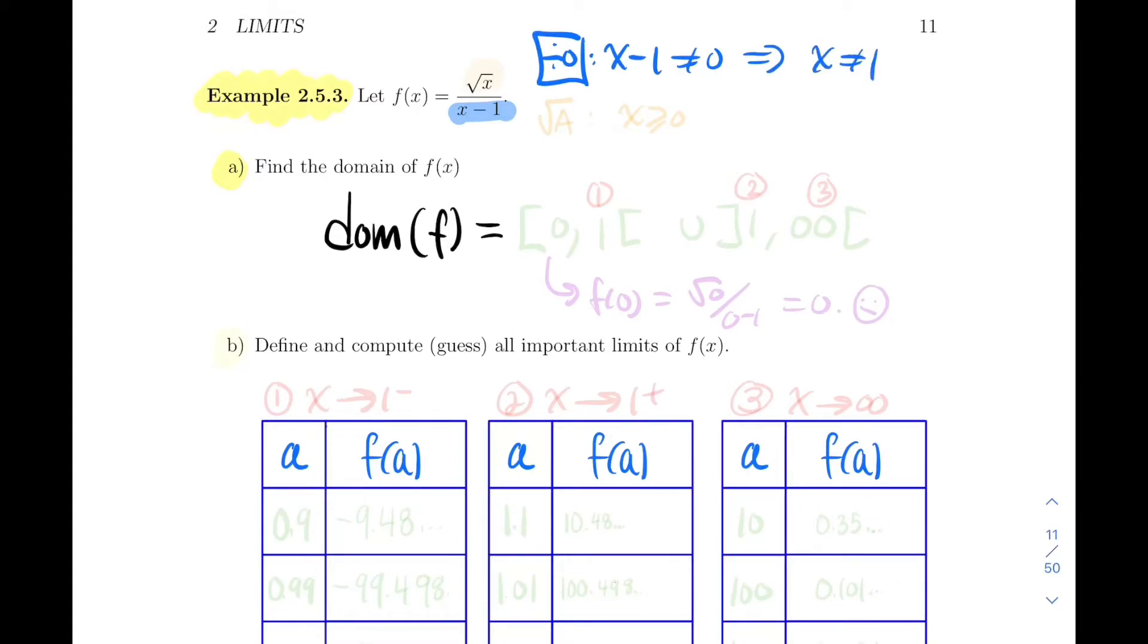We also have a square root of something. That something is simply x though. For the square root problem we want the inside, so we want x to be bigger or equal than zero. Bigger or equal than zero removing 1, this will give us the domain from 0 to 1 open union 1 to infinity.